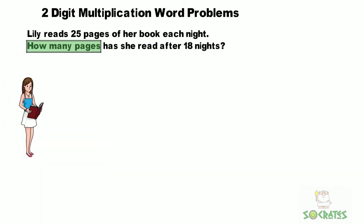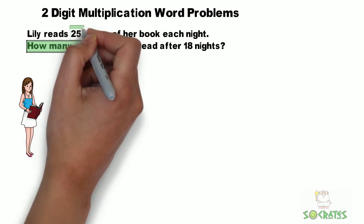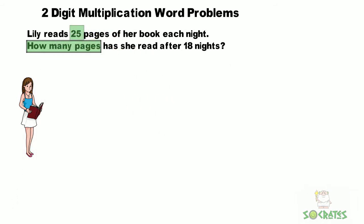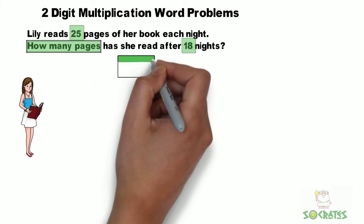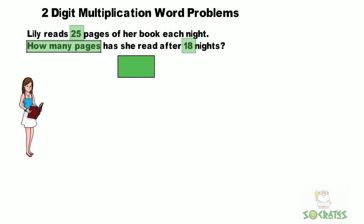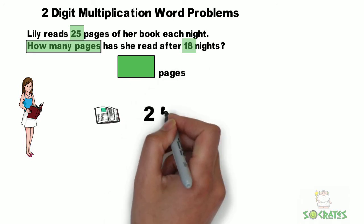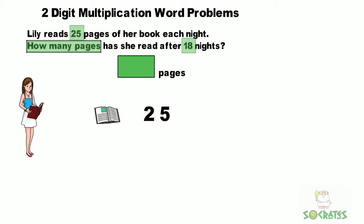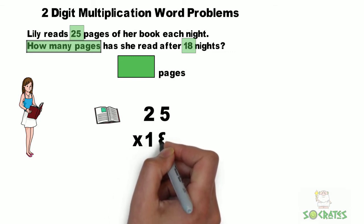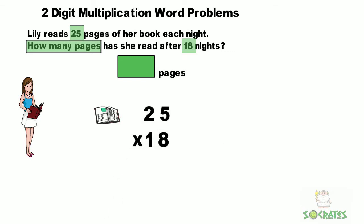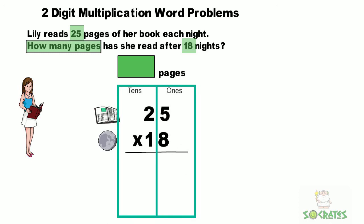So they want to find out how many pages. What do we know? She reads 25 pages for 18 nights. So our answer is going to be 25 pages times 18 nights. So let's use our tens and ones.